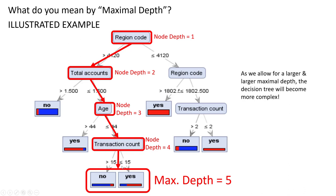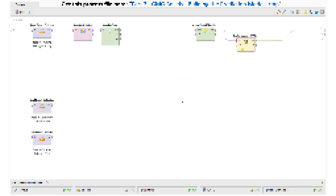There are other pathways that are shorter, but the maximum one gives this particular decision tree a maximum depth of five. If we had a maximum depth of six, seven, eight or more, that would make the decision tree potentially more complex. A shorter maximum depth of two or three would give us a much smaller, simpler model. Hence, by varying the maximal depth we allow the decision tree to have, we actually vary the complexity of our prediction models.